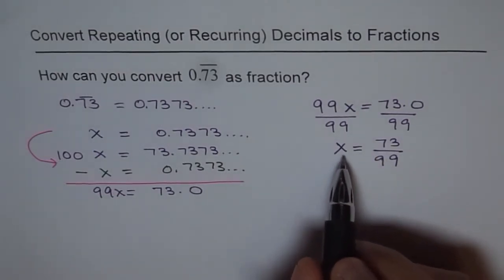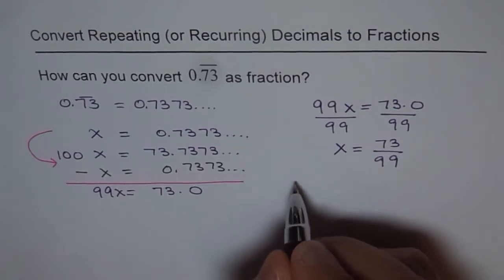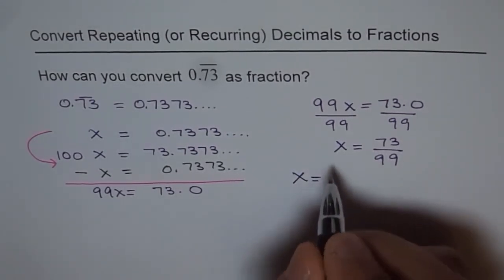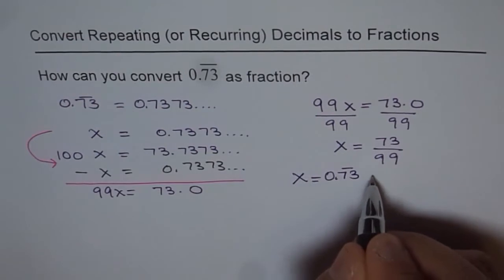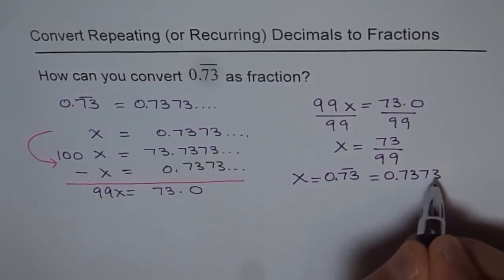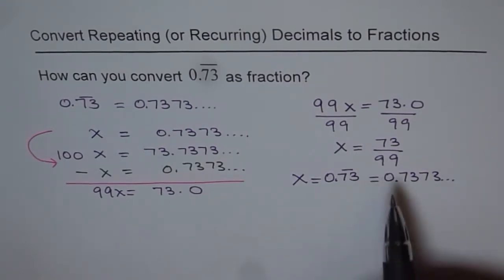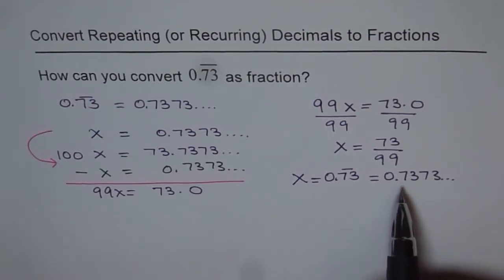And what is x? X is 0.73 recurring. Therefore I can now write x equals 0.73 recurring, which is the same as 0.7373... where it repeats forever, right?